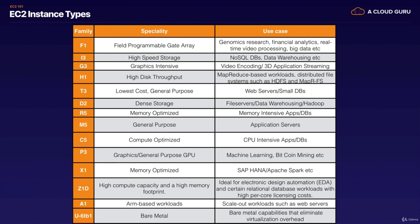R5 is memory optimized, useful for memory intensive apps or databases. M5 is general purpose, typically used for application servers. C5 is compute optimized for CPU intensive applications and databases. P3 is for graphics or general purpose GPUs — good for machine learning or Bitcoin mining. X1 is memory optimized, useful for SAP HANA and Apache Spark. Z1D has high compute capacity and high memory footprint, ideal for electronic design automation and relational database workloads with high per-core licensing costs. A1 is for ARM-based workloads such as scale-out web servers. U6-TB1 is used for bare metal.